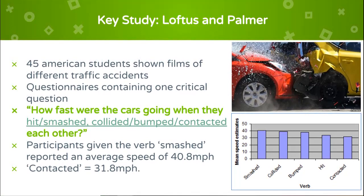Key study: Loftus and Palmer (1974) looked into the effects of leading questions on eyewitness accuracy. 45 American students were shown films of different traffic accidents. After each film, participants were given a questionnaire containing one critical question with one of five verbs. The question was: 'How fast were the cars going when they ___ each other?' The blank contained either the word hit, smashed, collided, bumped, or contacted.